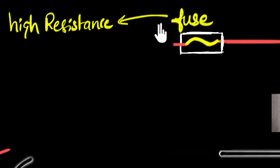And to ensure that it melts quickly, it will have low melting point. So it also needs to have low melting point. So with these two features, a fuse wire can be built to protect our circuits.